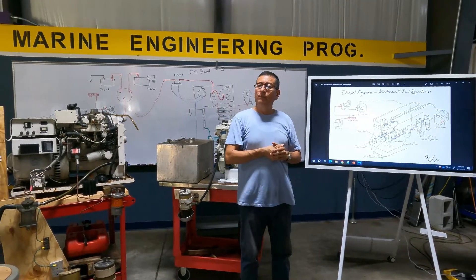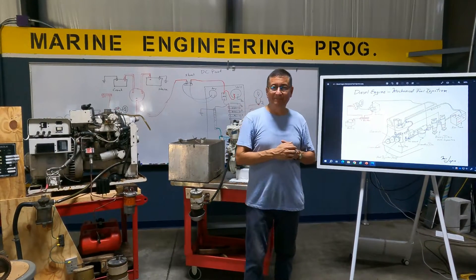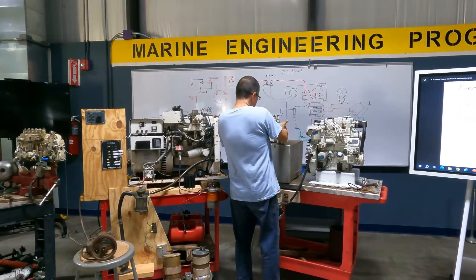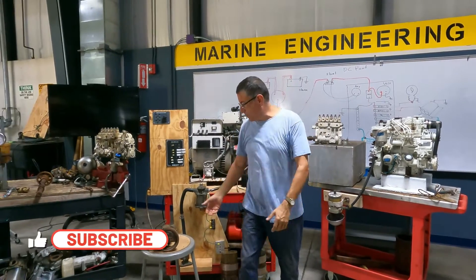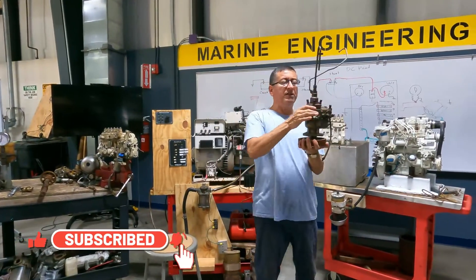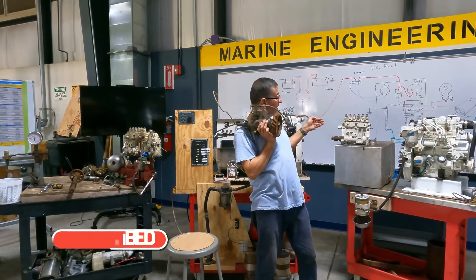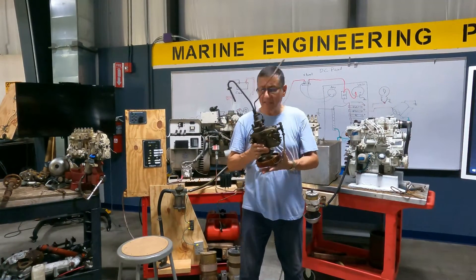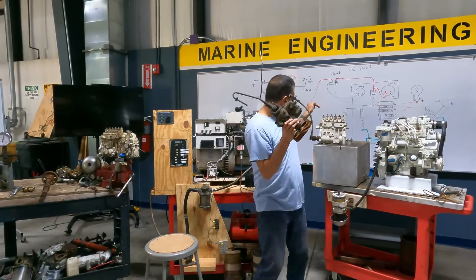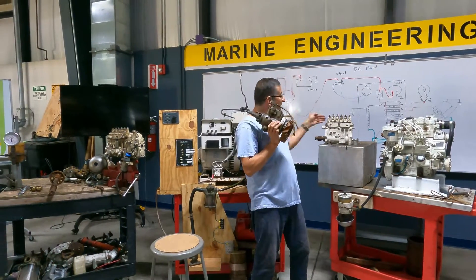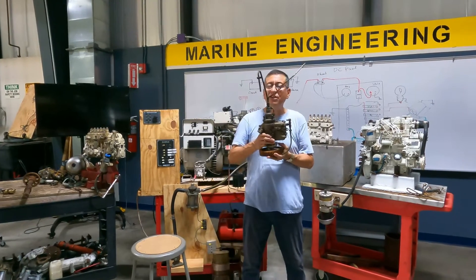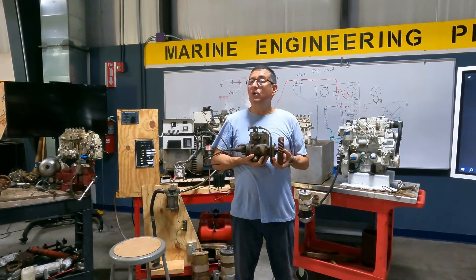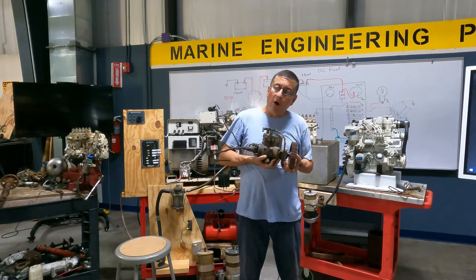What is the difference between this mechanical fuel injection pump and this other mechanical fuel injection pump? This one is in-line and this one is rotary. The in-line pump is for six cylinders and so is the rotary - but the rotary works like a distributor. There are manufacturers where you can order the same engine with either an inline pump or a rotary pump.